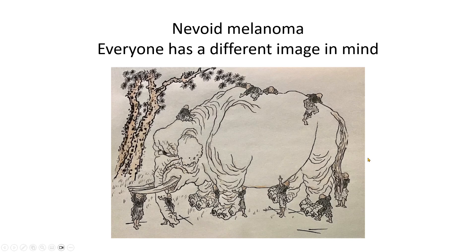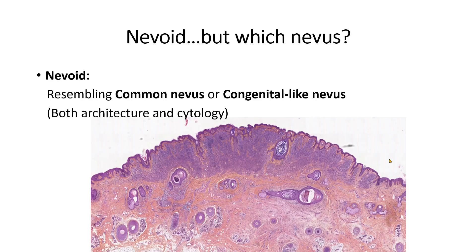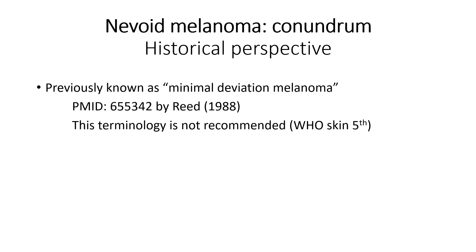About nevoid melanoma, everyone has a different image in mind when it comes to this diagnosis. Which nevus are we talking about? Here we'll mainly be talking about lesions that will be resembling common nevus or congenital-like nevus, like in the example shown here. In the past, such tumors were sometimes called minimal deviation melanoma, especially by Reed.